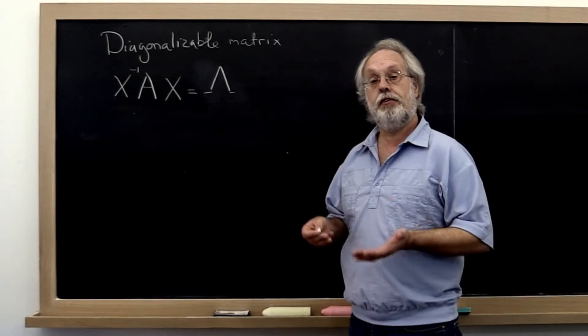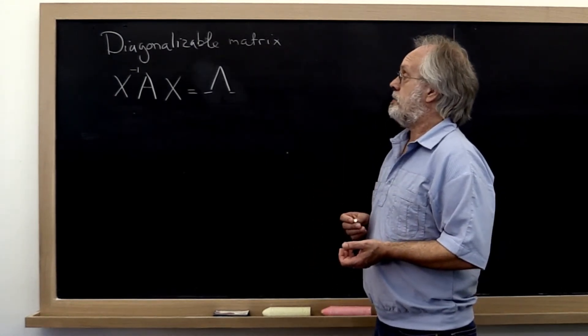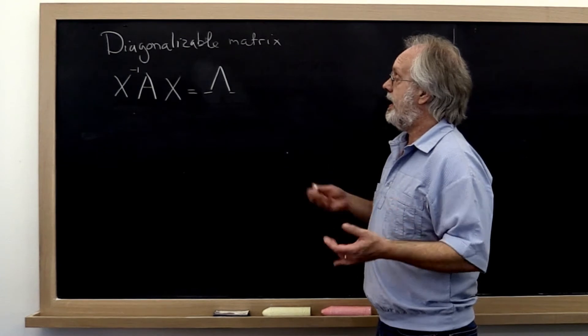We now take what we have learned about eigenvalues and eigenvectors and relate it back to diagonalizable matrices. Now what is a diagonalizable matrix?